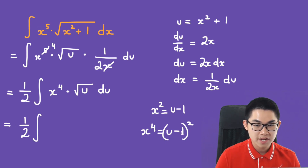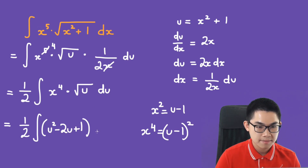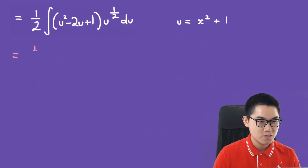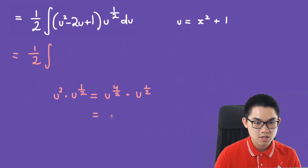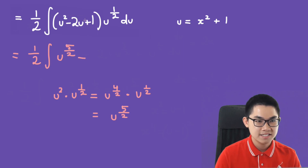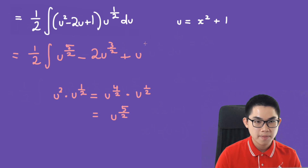Expanding (u minus 1) squared gives u squared minus 2u plus 1, so we have 1 over 2 times the integral of (u squared minus 2u plus 1) times u to the power of 1 over 2, du. Distributing, this becomes u to the power of 5 over 2 minus 2u to the power of 3 over 2 plus u to the power of 1 over 2.